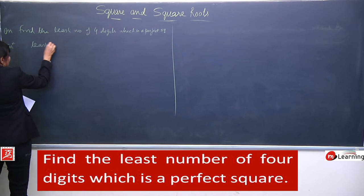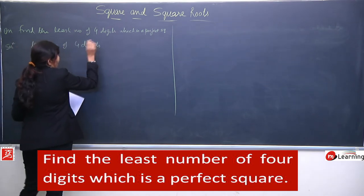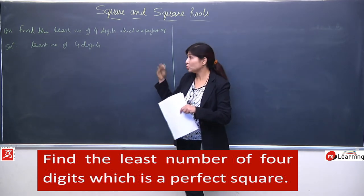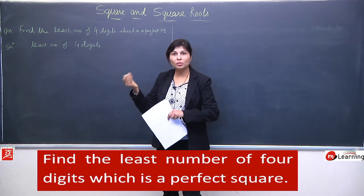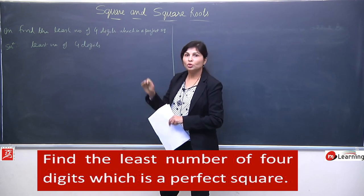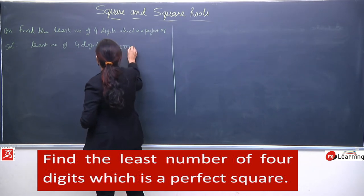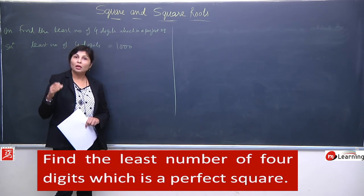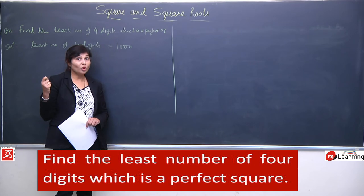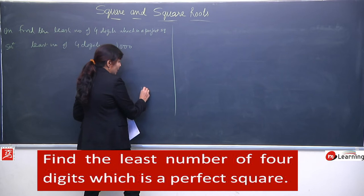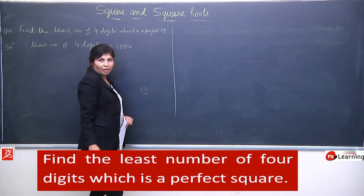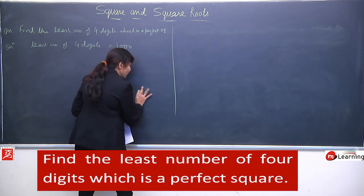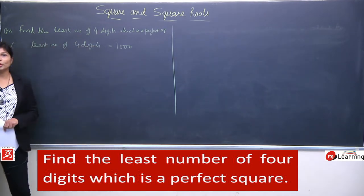Least number of four digits kya hoga? Least number of four digits is 1000, because 1000 se chhota jo bhi hoga wo three digits ban jayega - 1000 minus 1 gives 999. Toh four digits ka sabse chhota number is 1000. Yahan par aapko yeh decide karna hai ki is question mein what least number must be subtracted ya added karna hai. Agar hum subtract kar dein, toh answer three digits mein convert ho jayega. Agar add karenge toh four digits maintain rahenge. Means hume is question mein addition wala procedure hi karna hai.